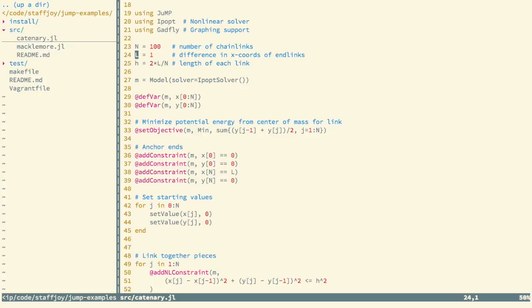Then we're going to define the length of each link here based on the number of links that we created. We instantiate the model. We say we're going to use the Ipopt solver.